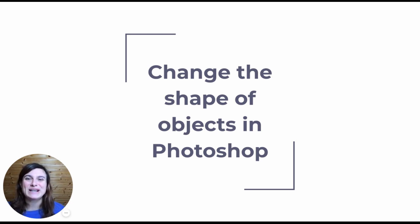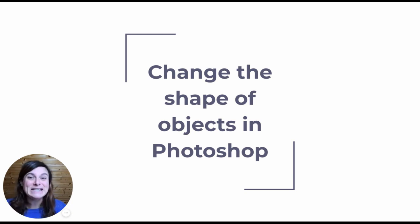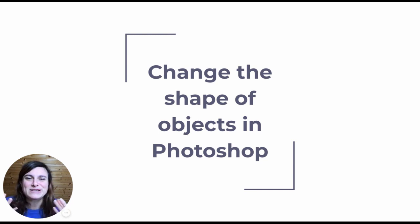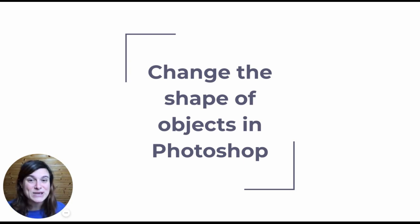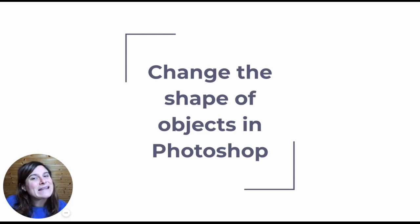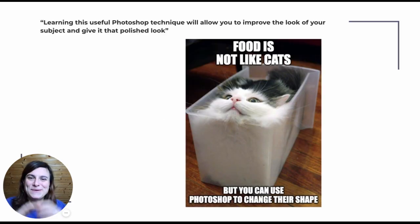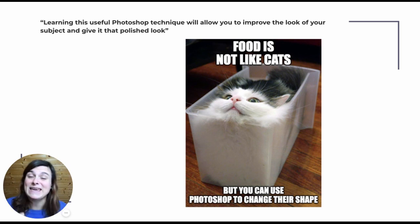Hi, I'm Julia. Welcome to today's class. Today's topic is super fun: how to change the shape of objects in Photoshop. This technique is useful because in food photography, it's not realistic to find the perfect item. You cannot always bake the perfect macaron or find the perfectly shaped chocolate or strawberry, so sometimes it's useful to lend a hand to nature and help with shaping things.